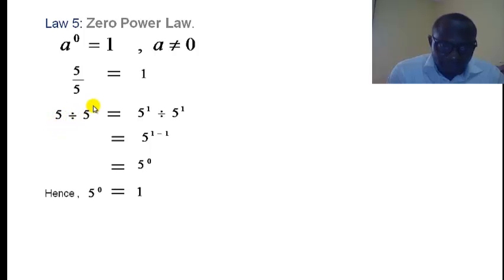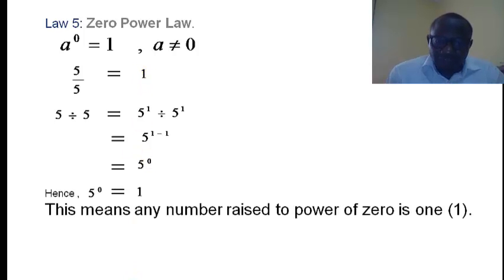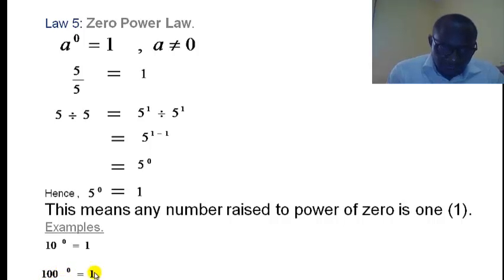This leads us to the conclusion that any number raised to the power of 0 is 1. For example, 10 raised to the power of 0 is equal to 1. Similarly, 100 raised to power 0 is equal to 1, and it therefore implies that 1000 raised to the power of 0 will also be 1.